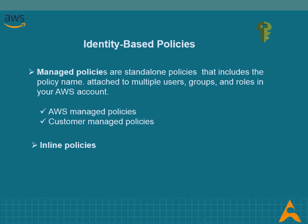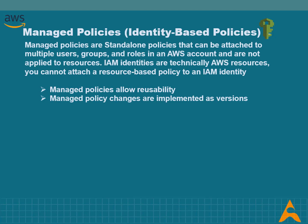Identity-based policies are permission policies that you can attach to a principal or identity such as an IAM user, role, or group. These policies control what actions that identity can perform, on which resources, and under what conditions. Identity-based policies can be categorized into managed and inline policies. Managed policies are standalone policies with their own Amazon Resource Name (ARN) that can be attached to multiple users, groups, and roles. Managed policies allow reusability, and changes are implemented as versions — a new change creates a new version, useful for comparing changes and reverting if needed.